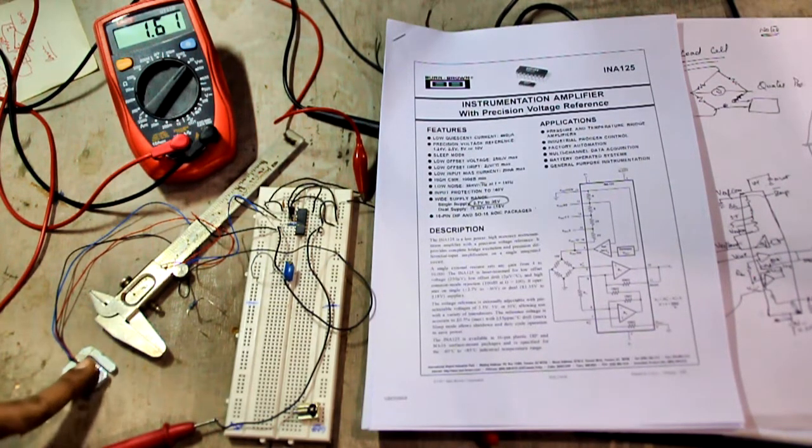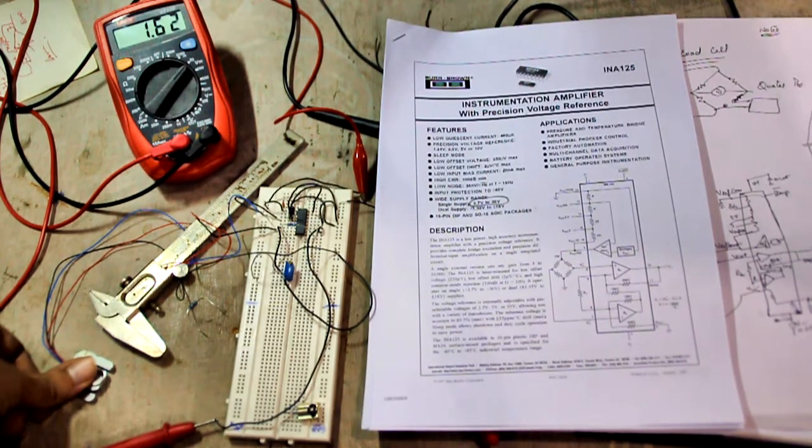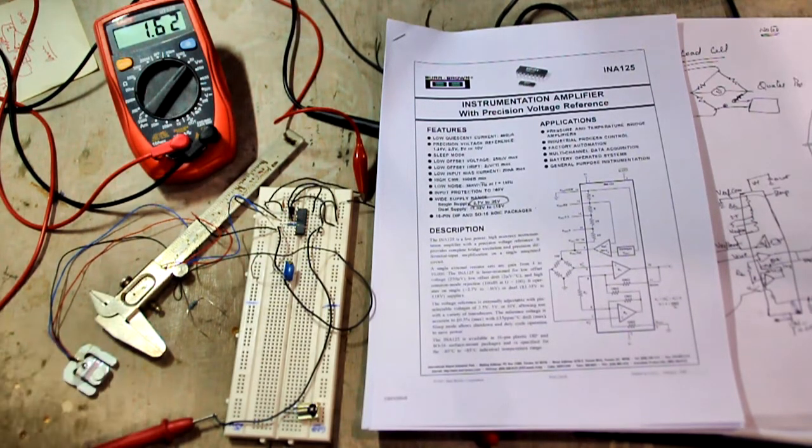Now the problem is when you put some weight on these strain gauges - and this is a 50 kilogram one - if you put some weight on these things, they really don't produce that much voltage output. So what you need is an instrumentation amplifier, and for that I've used an INA125 and the gain is around 10,000.